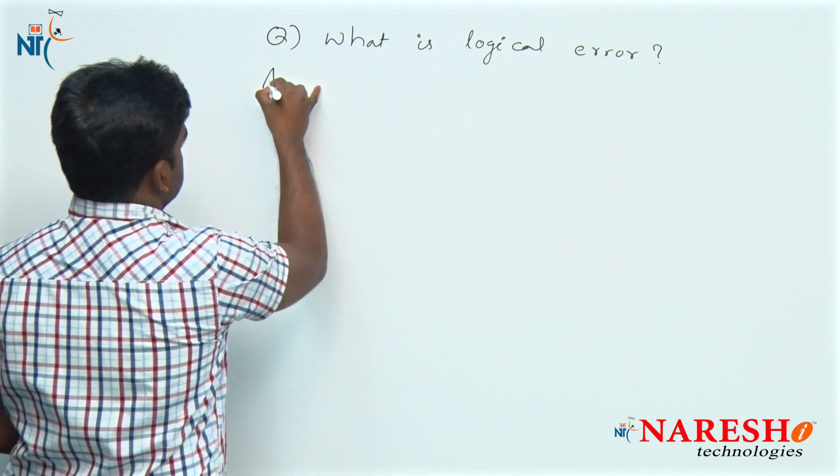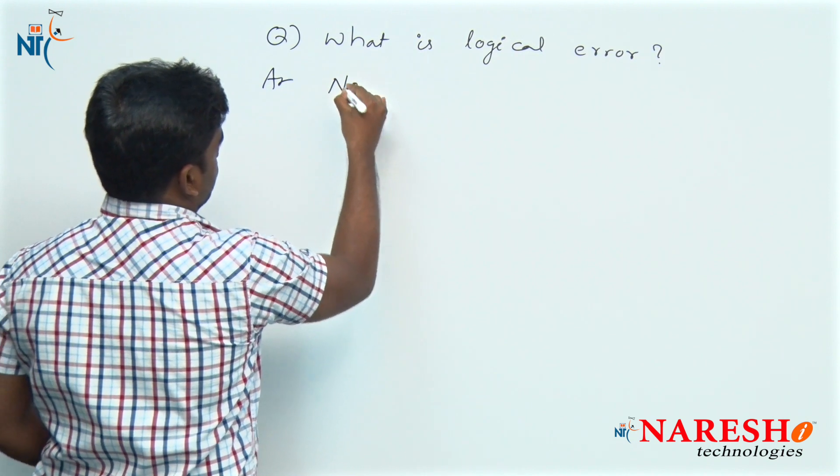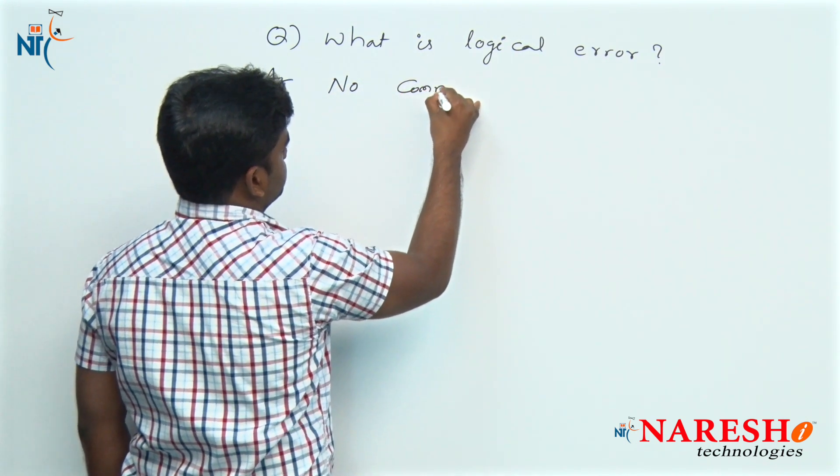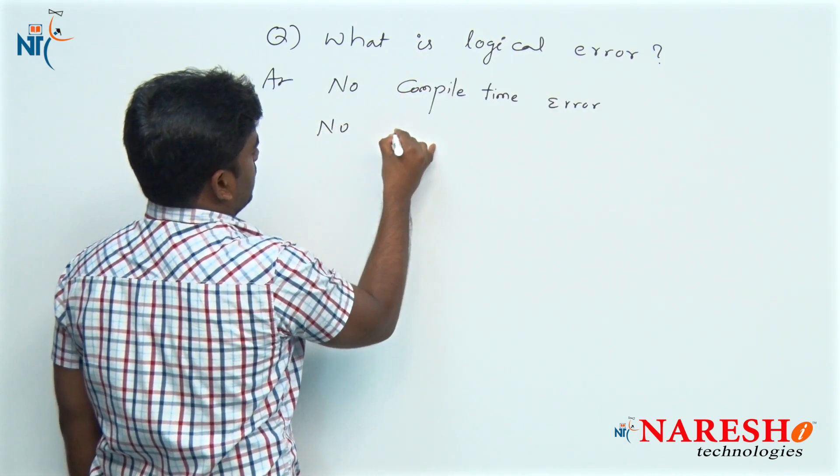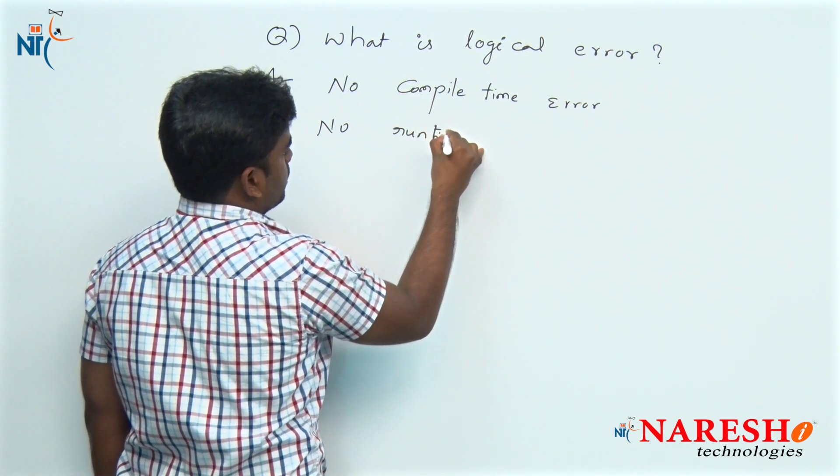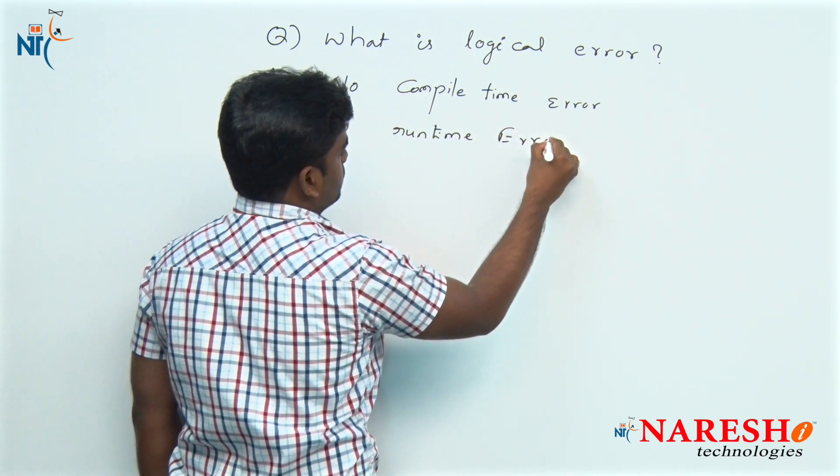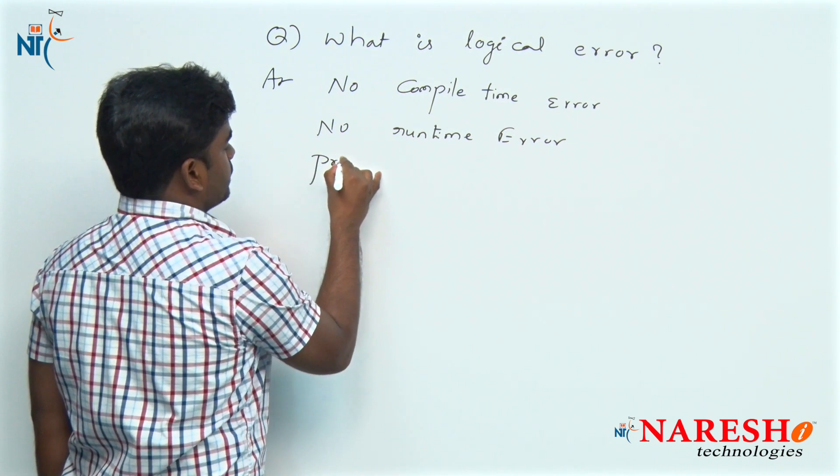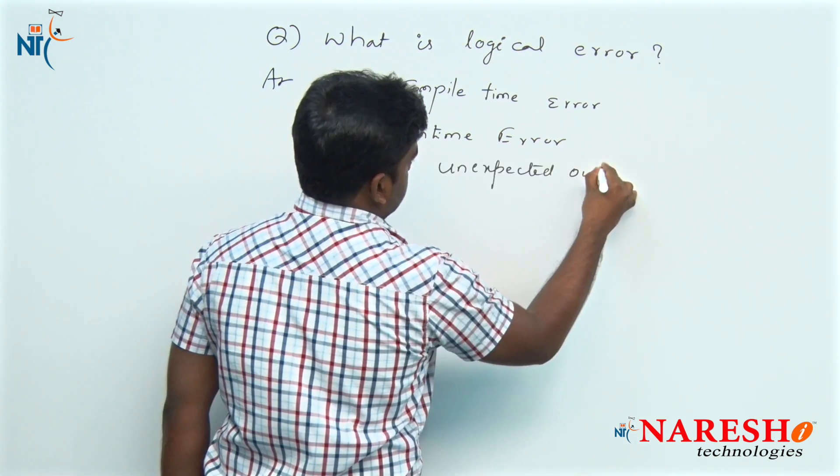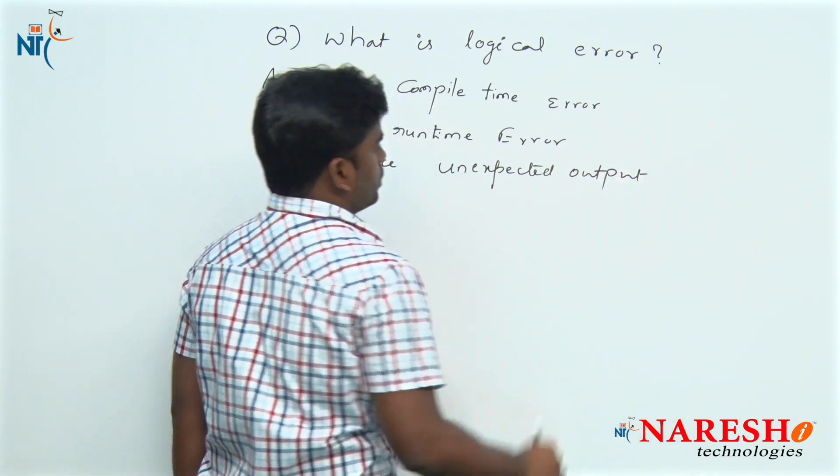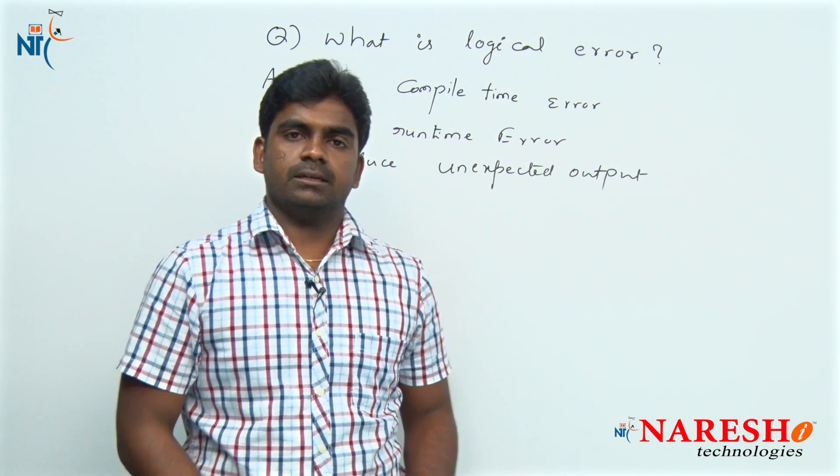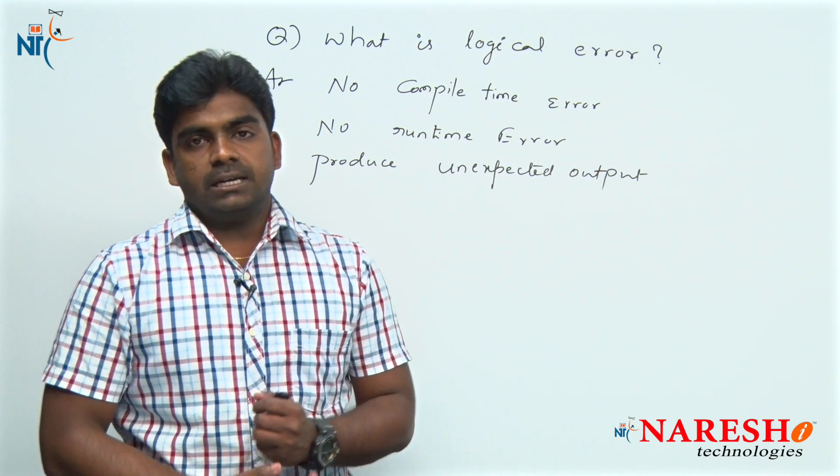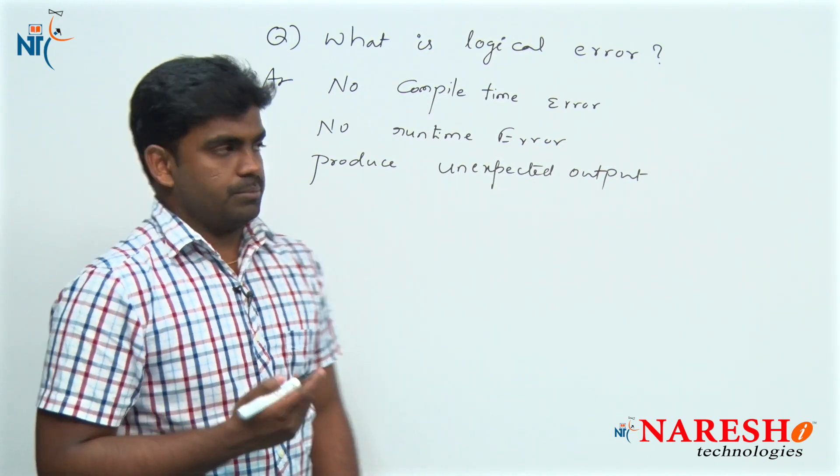But what you are expecting as the output will not be generated. Logical error means no compile time error and no runtime error, but it will produce unexpected output. That means the program is logically incorrect. Let me give you one simple example.